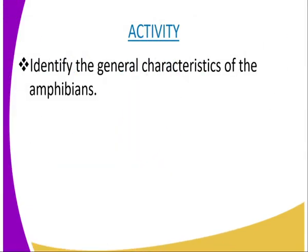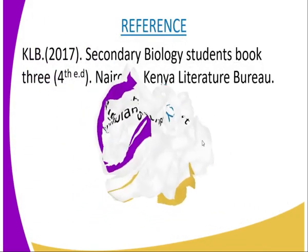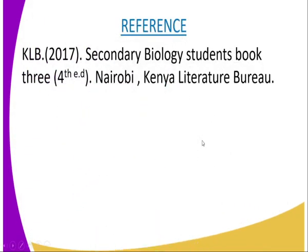Having done and said that, you can have the following activity whereby you will be required to identify the general characteristics of the amphibians. For more information on this lesson, you can refer to KLB secondary biology student's book 3, which is the fourth edition verified by the Kenya Literature Bureau.